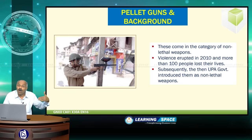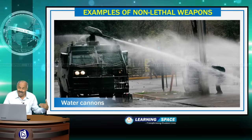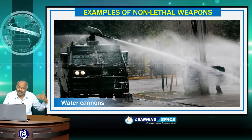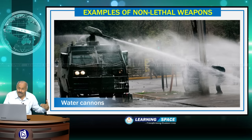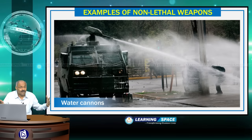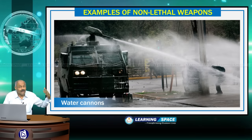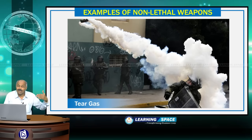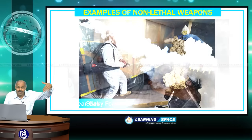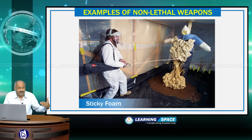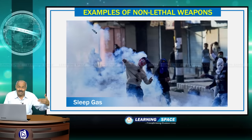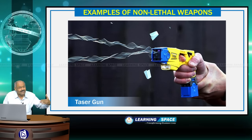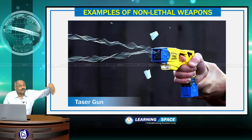Examples of non-lethal methods include water cannons — one method of crowd dispersal where death will not occur and only the crowd will be dispersed. Other methods include pepper spray, tear gas which is commonly used for dispersing crowds, sticky foam used in foreign countries, sleep gas, and taser guns which temporarily incapacitate a person. These are all examples of non-lethal methods of crowd control.